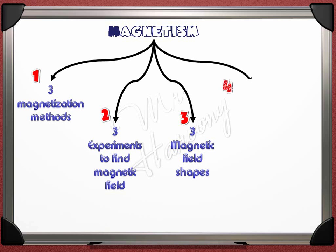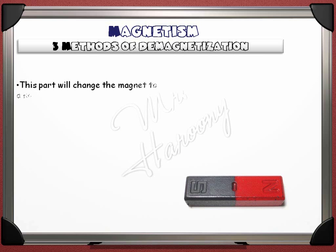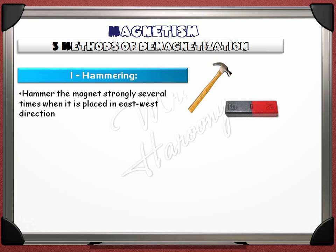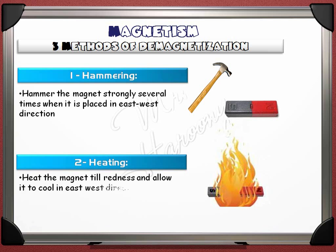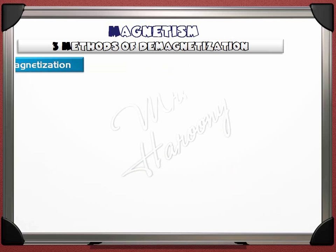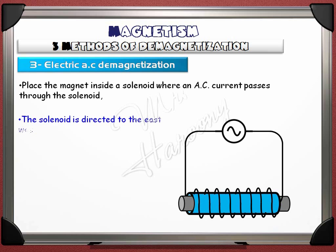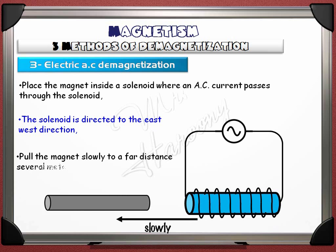The fourth and final part of the lesson covers three methods of demagnetization — changing a magnet back to a normal piece of iron or steel by removing its magnetic property. Method 1: hammering — hammer the magnet strongly several times while it is placed in an east-west direction. Method 2: heating until redness — heat the magnet until red and allow it to cool in an east-west direction, but this may spoil steel. Method 3: electric AC demagnetization — place the magnet inside a solenoid with AC current, directed east-west, then slowly pull the magnet to a far distance of several meters. The rod is no longer a magnet.